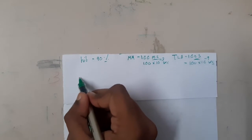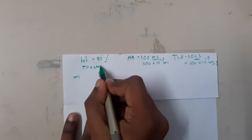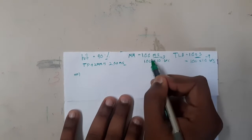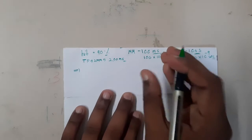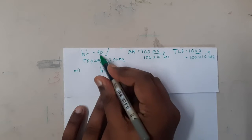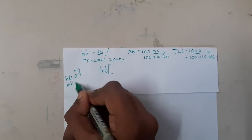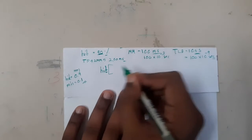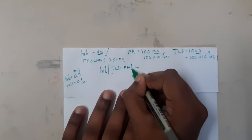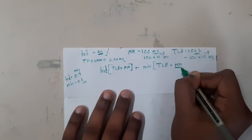Using traditional paging without TLB, it would take 2MM = 200 milliseconds to get data. With TLB, the effective access time formula is: hit probability × (TLB time + MM time) + miss probability × (TLB time + MM time + MM time). The hit chance is 0.9 and miss chance is 0.1. On a hit, time is TLB + main memory. On a miss, there is a TLB penalty plus you still need to search the page table and then access data.